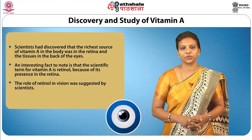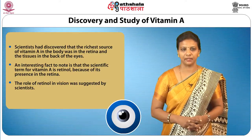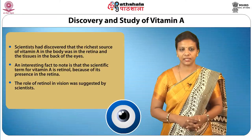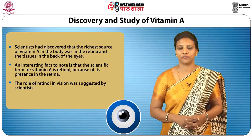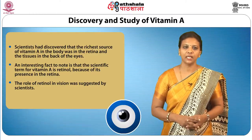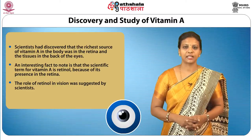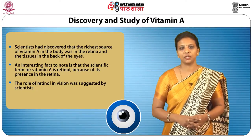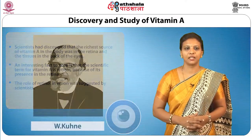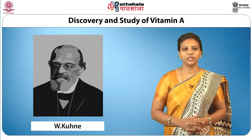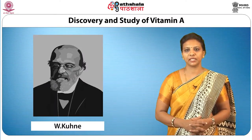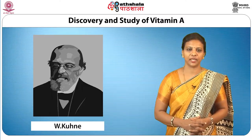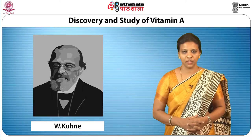Let us take a voyage through the history of the discovery and study of vitamin A. From earlier times, the need for certain foods necessary to prevent blindness was recognized. Scientists discovered that the richest source of vitamin A in the body was in the retina and the tissues at the back of the eyes. Hence, the scientific term for vitamin A is retinol because of its presence in the retina. In 1877, W. Kuhn, a German scientist, discovered that the purple retinas from dark-adapted frogs turn yellow when exposed to light, and through a complex biochemical cycle in the presence of vitamin A, the purple color is restored, which makes vision possible.